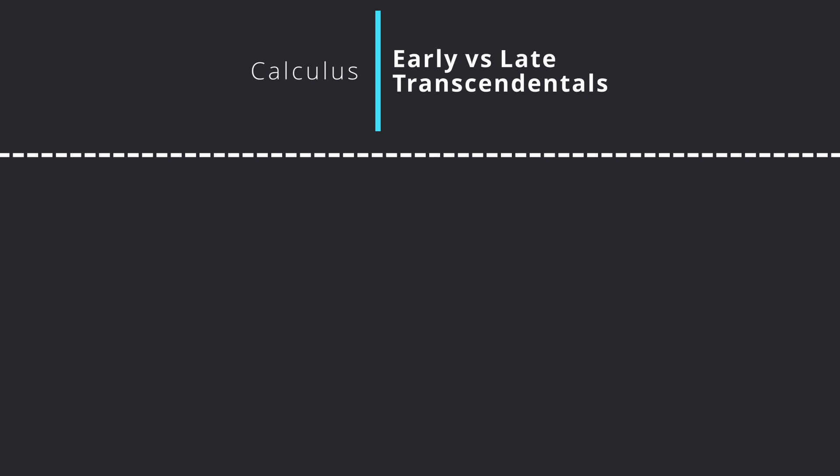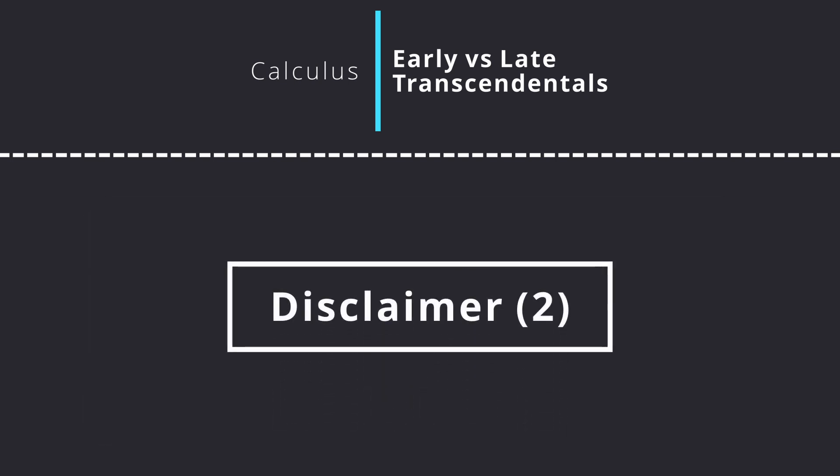A disclaimer needs to be said here though, before I overgeneralise late transcendentals further. Modern late transcendental books, such as the one by Anton and friends, follow an incredibly similar format to early transcendentals. In fact, early transcendentals naturally follows a close format from modern late transcendental books, except with a swapping of when the transcendental functions are introduced. What I referenced earlier is mostly a remnant of more antique calculus textbooks, which are not seen nowadays.